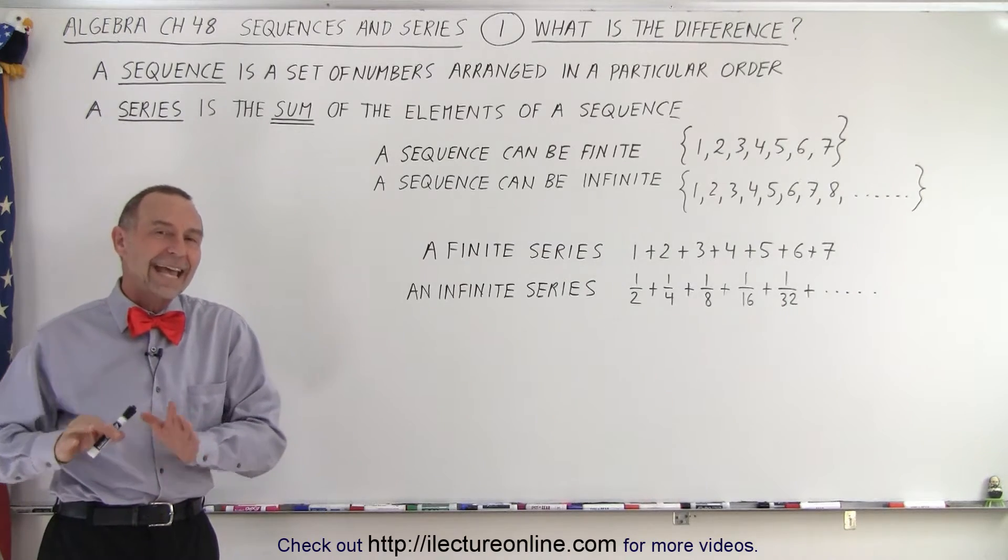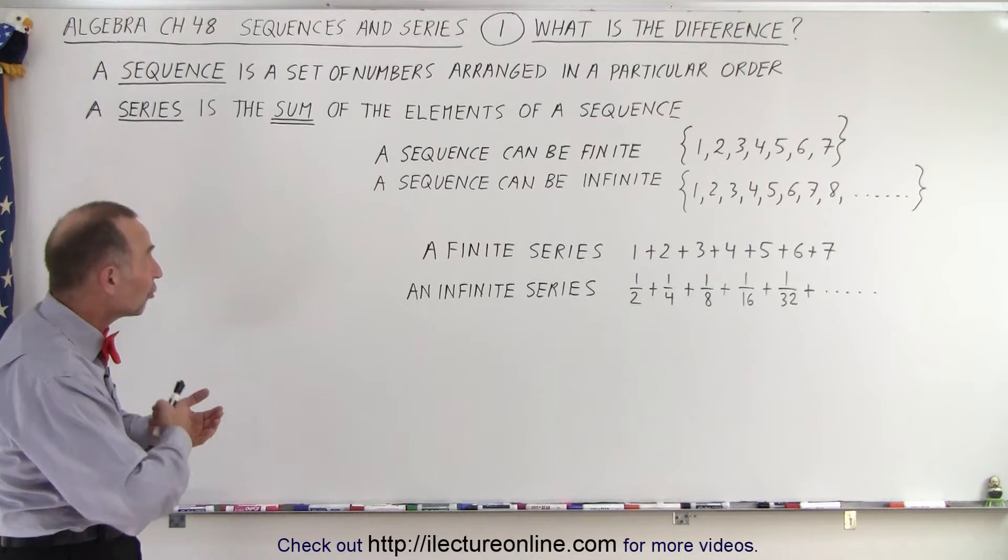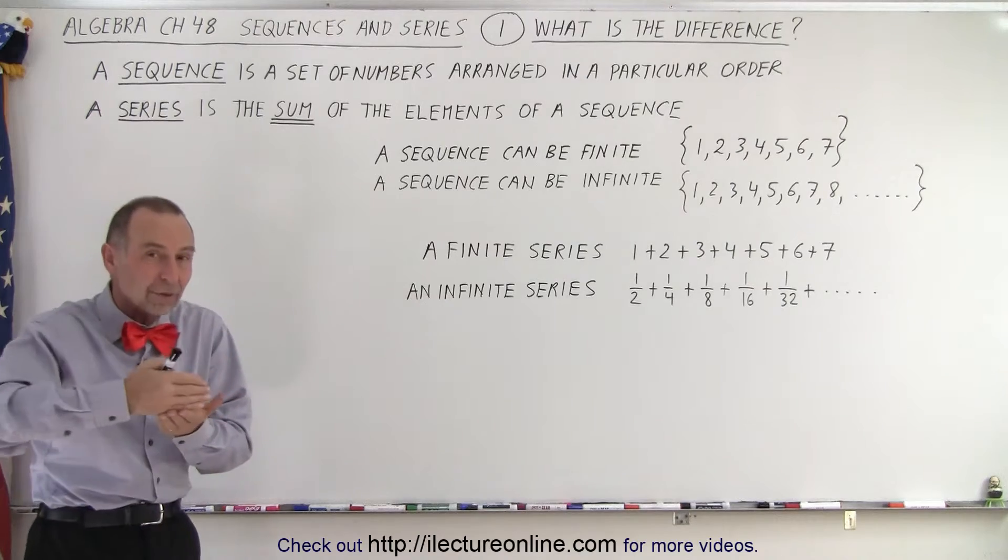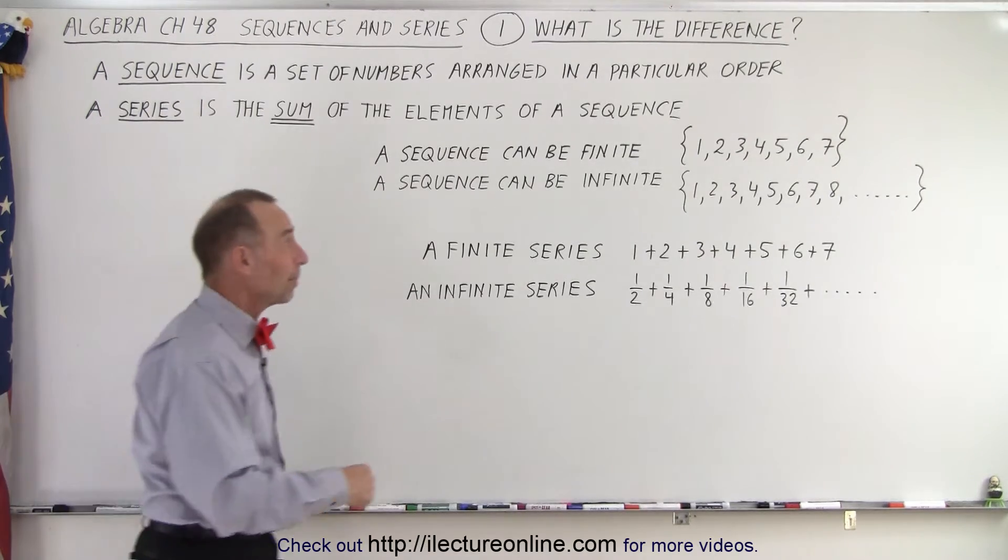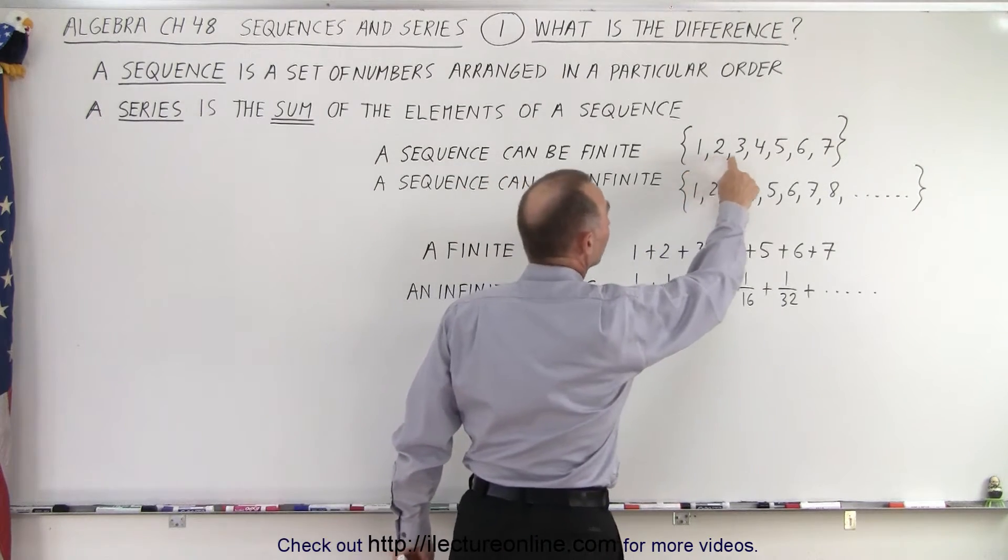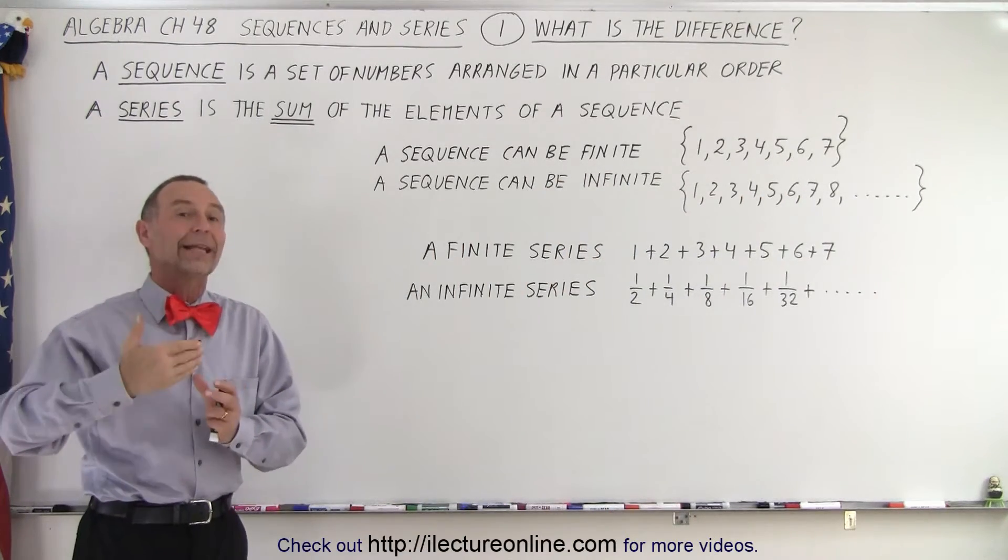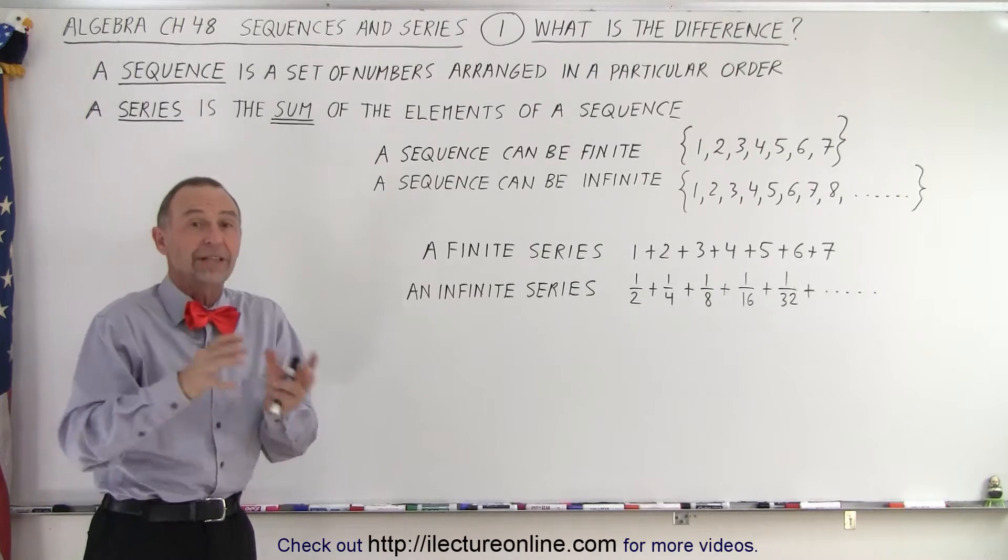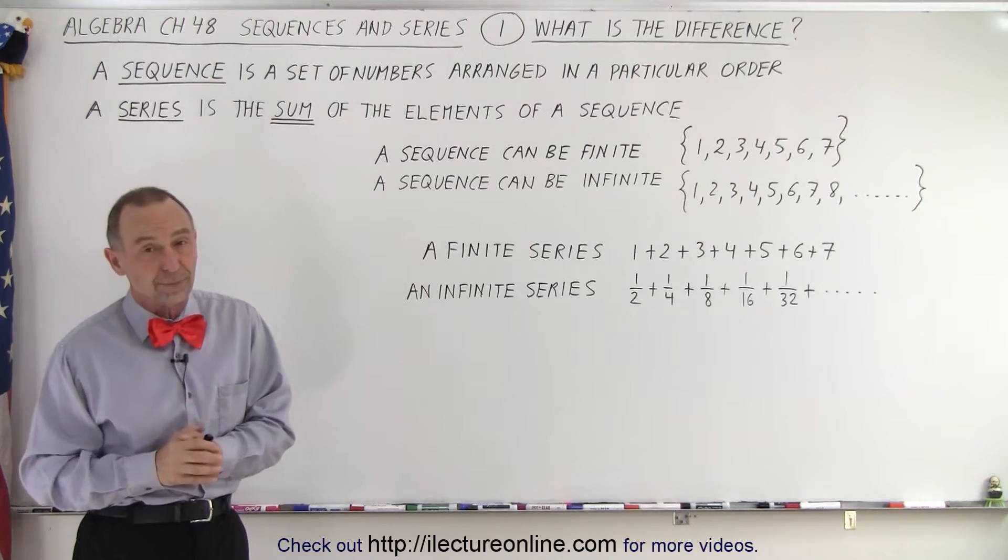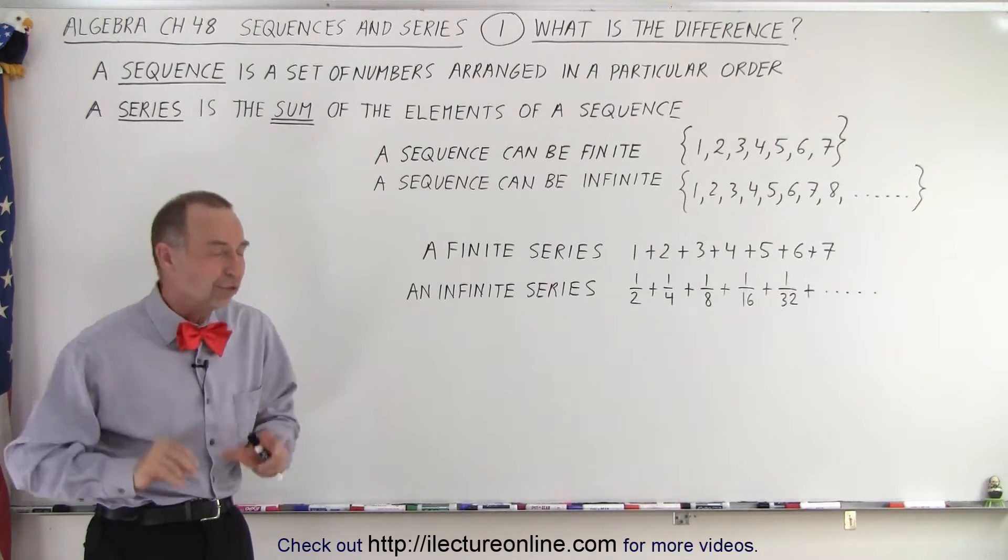And opposed to that, a series is actually the sum of the elements that go into a sequence. For example, this is what we call the elements of a sequence. And if we add them together, we turn that into a series. A series is simply a sum of the elements of a sequence. And that's the difference. So that's a good start.